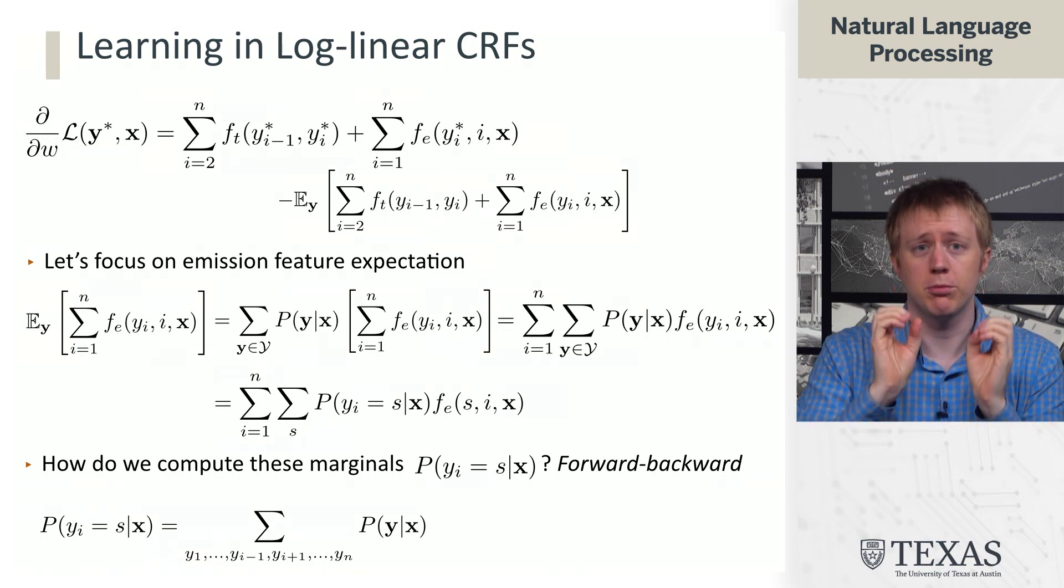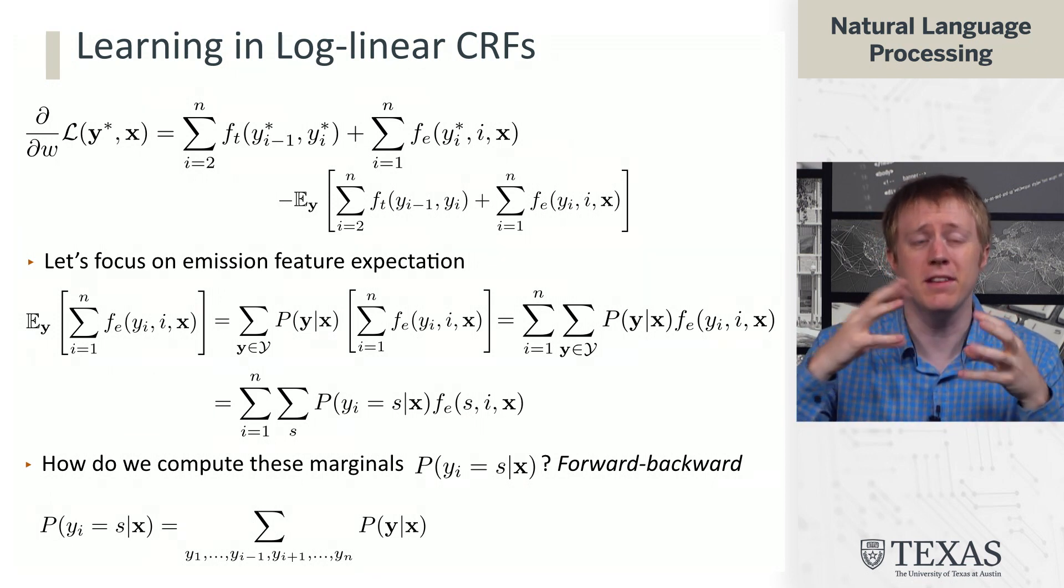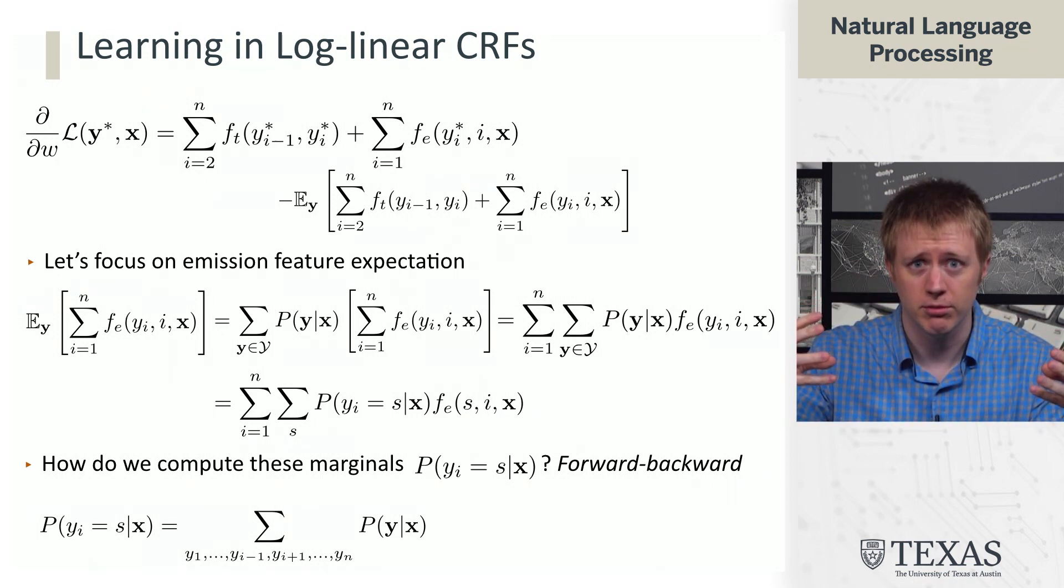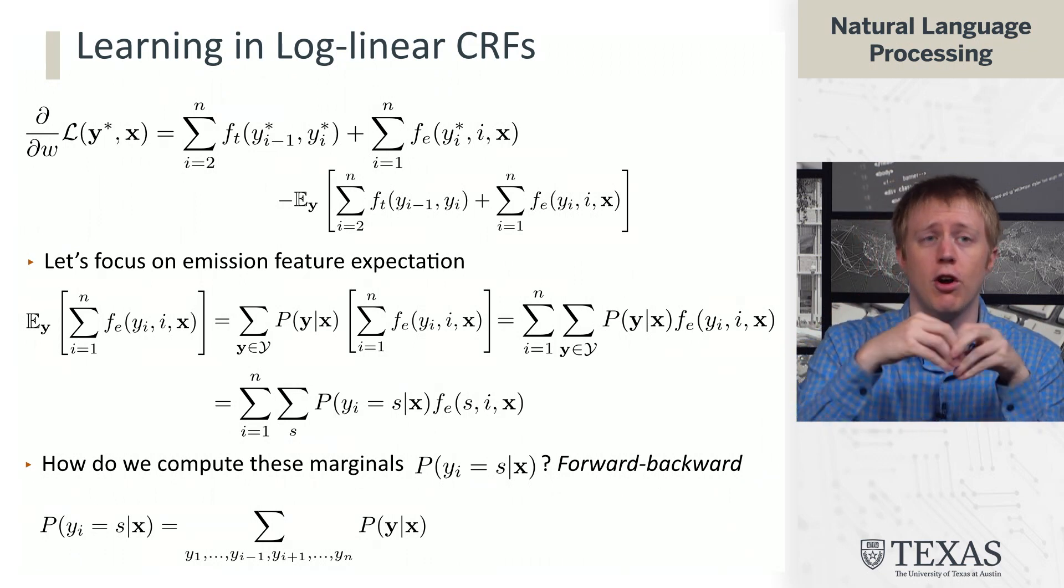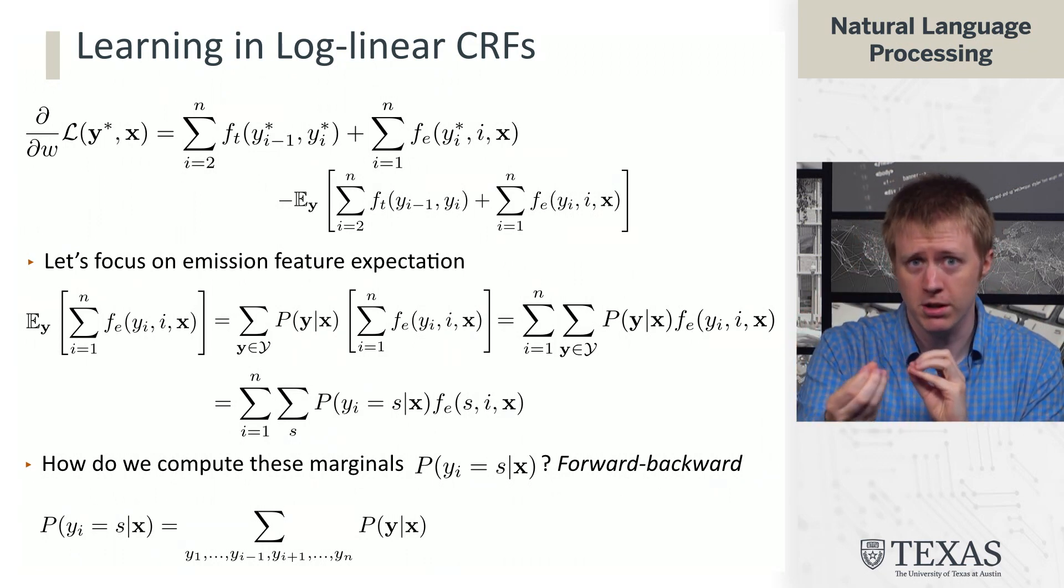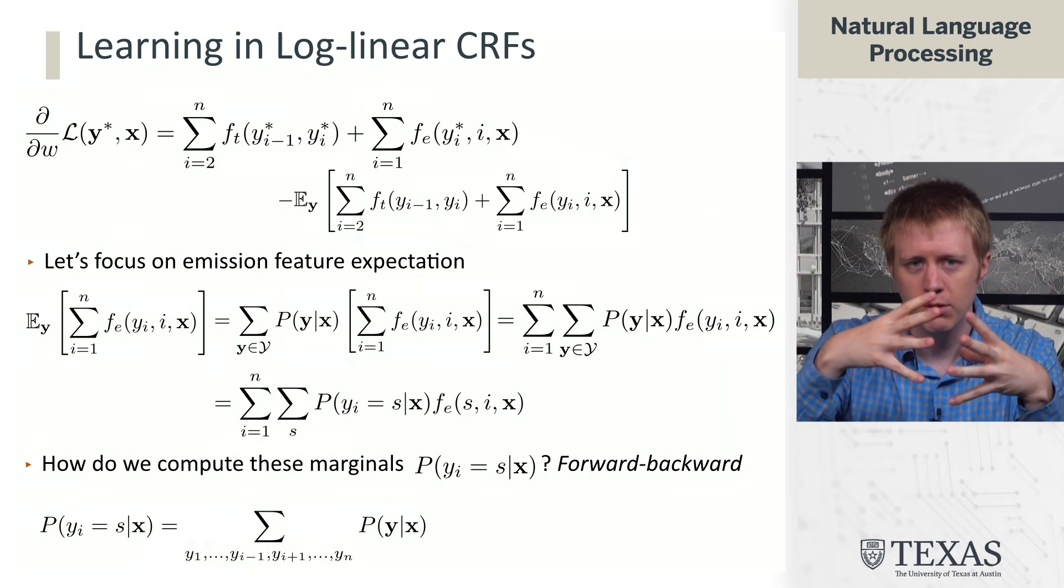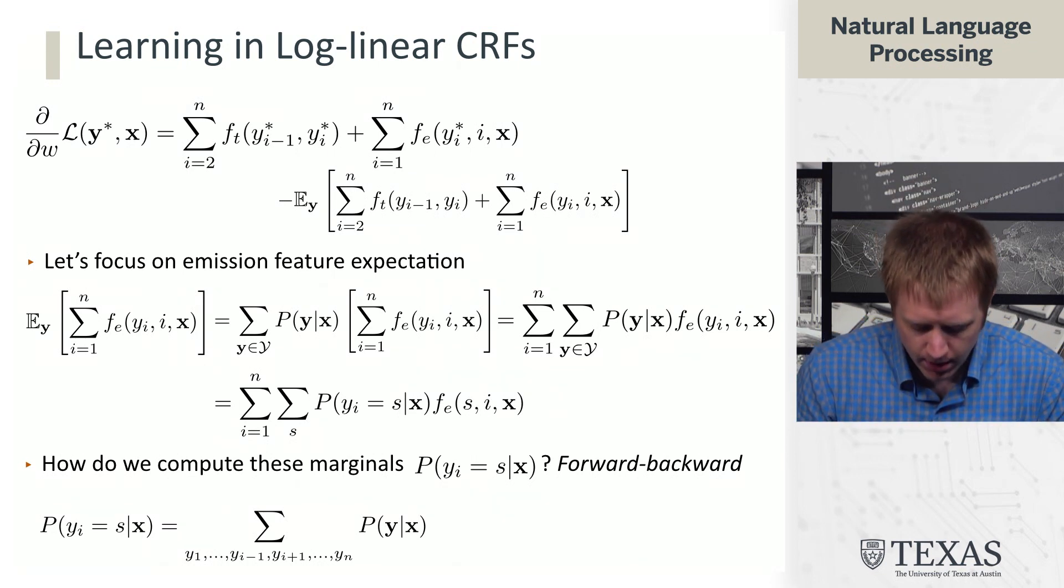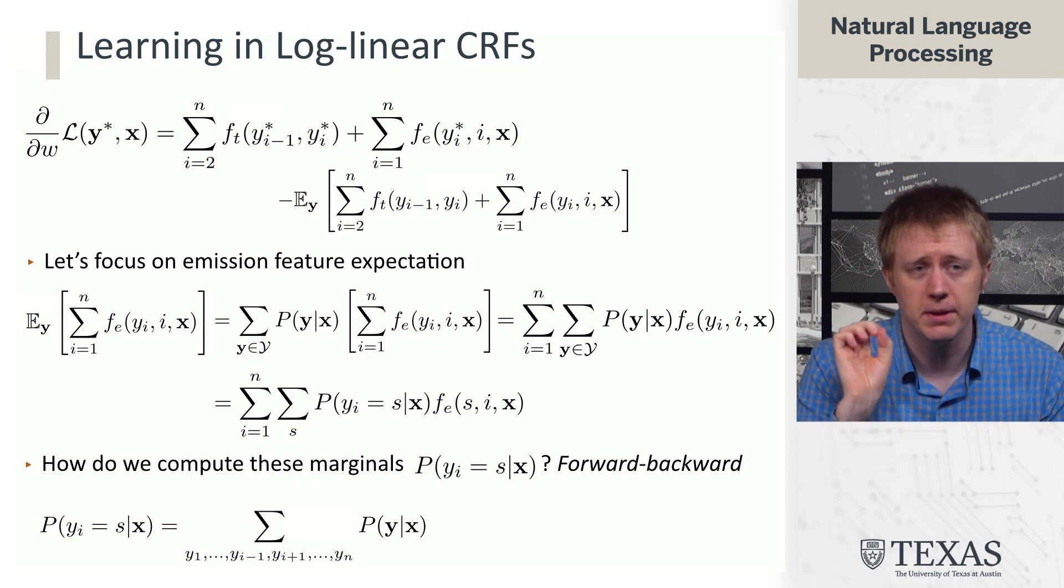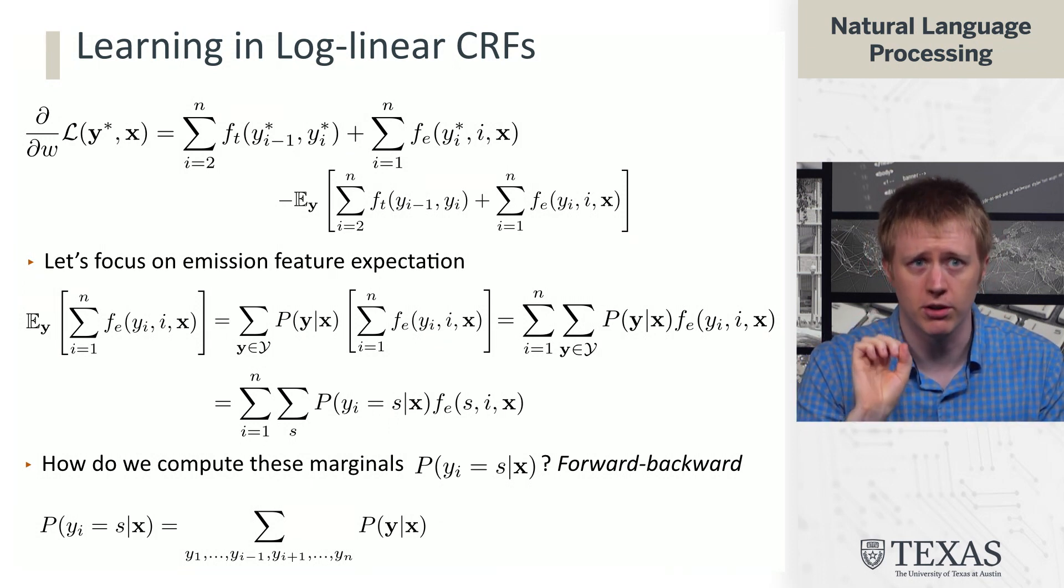Now notice that we can't just throw out the rest of the sequence and just look at this time step alone. Because what we're asking about is about a posterior distribution kind of based on summing over the whole sequence. Our model places distributions p of y given x over everything. And so in order to compute this marginal, we need to take that distribution over everything and sum it out. We can't just find some small piece of it to use to do this that doesn't work. But there is going to be an algorithm that allows us to do this. This is called the forward-backward algorithm and we are going to come back to that.